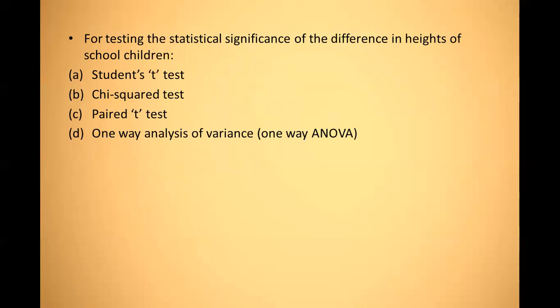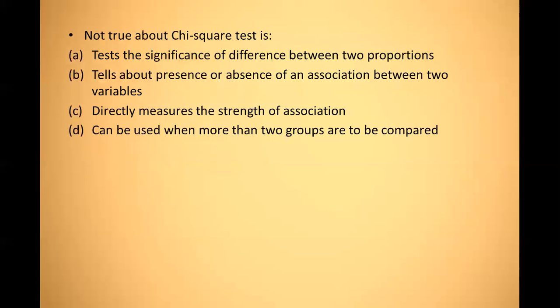For testing the statistical significance of difference in the height of school children, which is the best test? In this question, the group of children is not specified — in a school there may be more than two groups. Since it is not specified, one-way ANOVA is the best option.